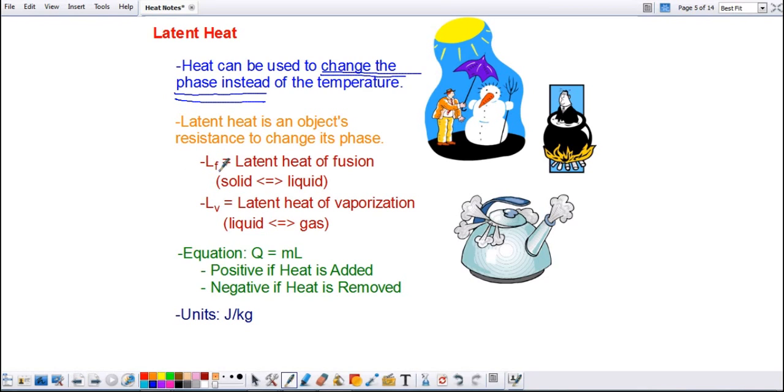The latent heat of fusion. This is the amount of heat it takes to turn a specific substance from a solid into a liquid, if you're adding the heat, or the amount of heat that needs to be removed if you're going from a liquid to a solid.